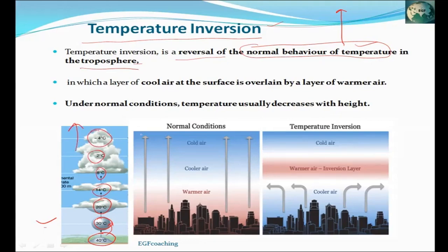Now, if this condition is reversed — it means that as the air mass goes up, the temperature of the surrounding environment is actually increasing. Suppose it was 30 degrees Celsius, then at a little elevation it is 35, then 40 degrees Celsius. This condition is called temperature inversion.